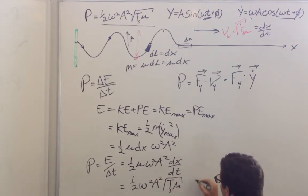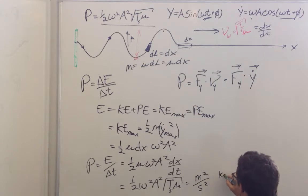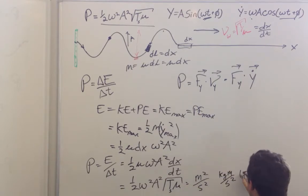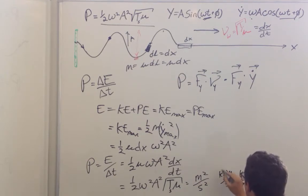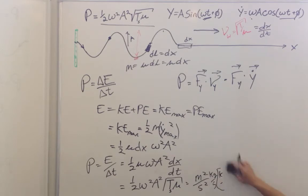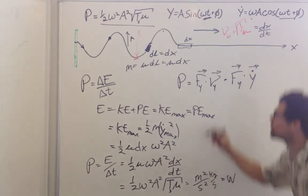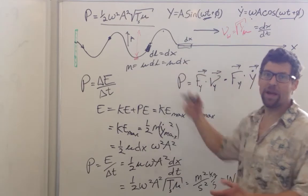Let's check units. Omega squared is per second squared; A squared is meters squared; tension is newtons or kilogram·meters per second squared; and mu is kilograms per meter. Taking the square root, kilograms squared per second squared comes out as kilograms per second. Overall I have kilogram·meters squared per second squared — that's joules per second — which is a watt. It's the power transmitted, the rate of energy transfer.